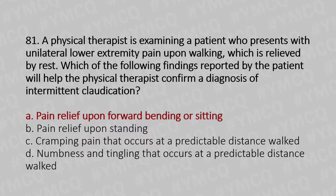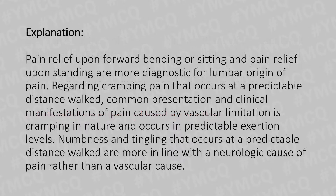The answer is Option C: cramping pain that occurs at a predictable distance walked. Pain relief upon forward bending or sitting, and pain relief upon standing, are more diagnostic for a lumbar origin of pain. Cramping pain that occurs at a predictable distance walked is a common clinical manifestation of pain caused by vascular limitation. Numbness and tingling at a predictable distance walked are more in line with a neurological cause rather than a vascular cause.